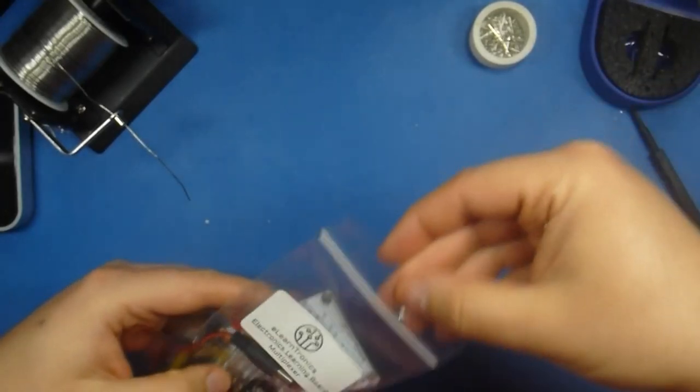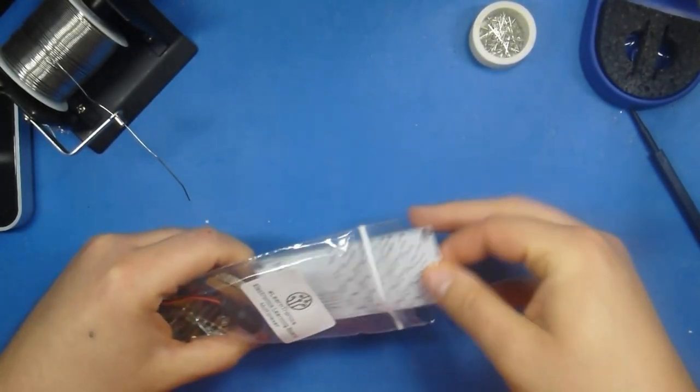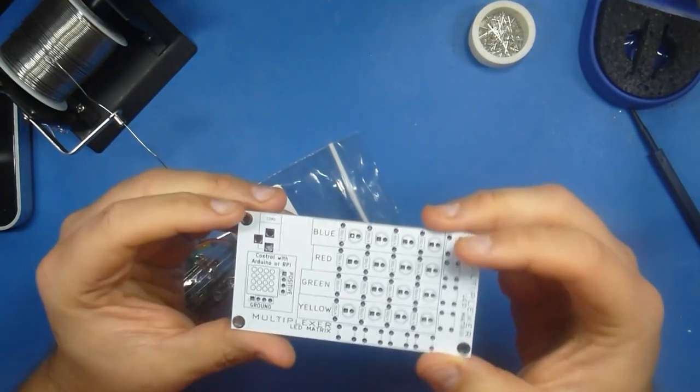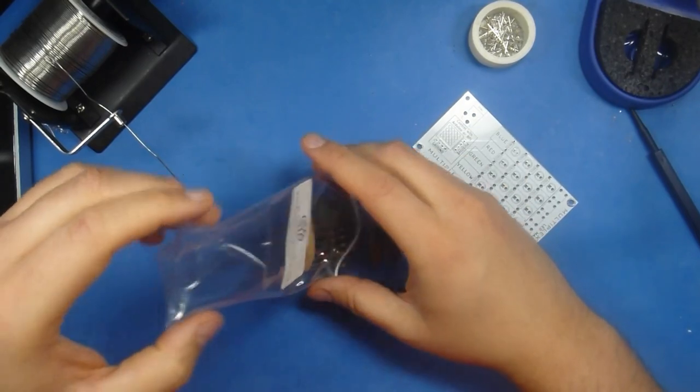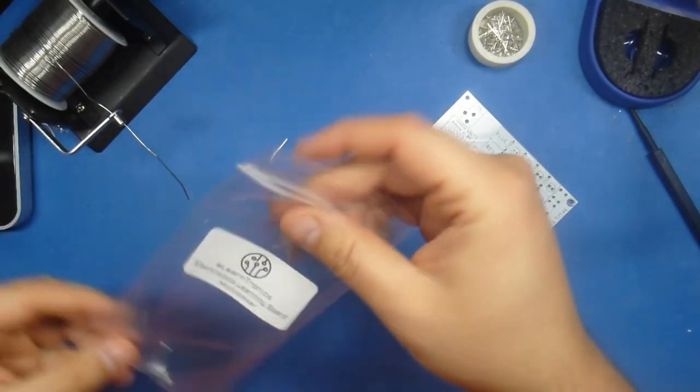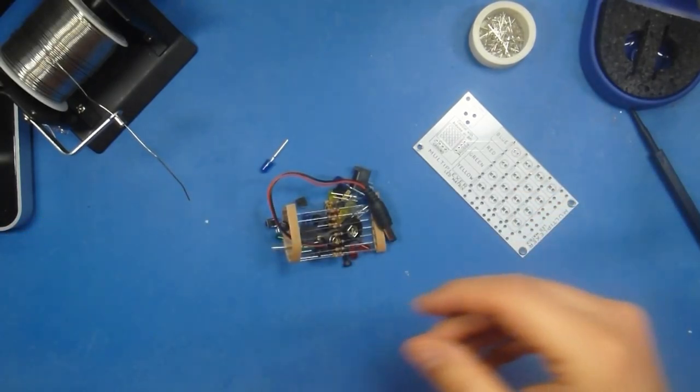You should have your kit in hand. It may not look exactly like this, but whatever package it's in, go ahead and pull out the board. This is the multiplexing board, and then just dump out all of the other components. You won't need the bag anymore, so feel free to set it aside.